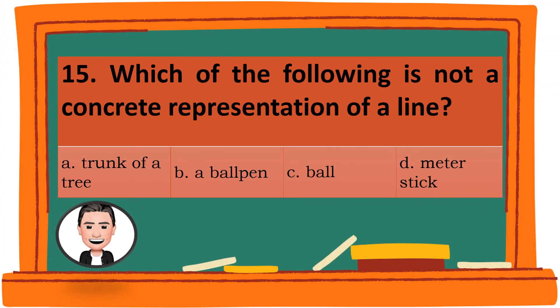Question 15. Which of the following is not a concrete representation of a line? A. Trunk of a tree. B. A ball pen. C. Ball. D. Meter stick. The correct answer is C. Ball.